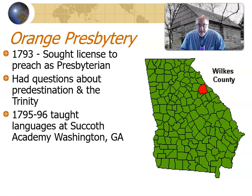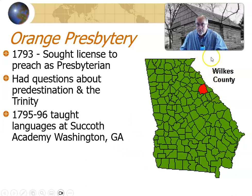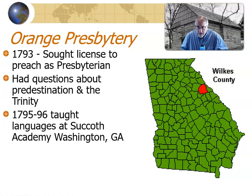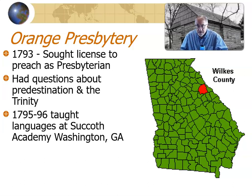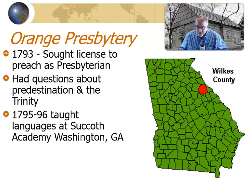In 1795 and 1796, Stone goes to the northeast part of Georgia near Washington, Georgia, where he teaches languages at the Succoth Academy. He was very gifted at languages. One of the languages he learns here is French, because during 1795–1796 — the time of the French Revolution — a man who had fled France came to the academy and taught French, and Barton W. Stone studied French with him.